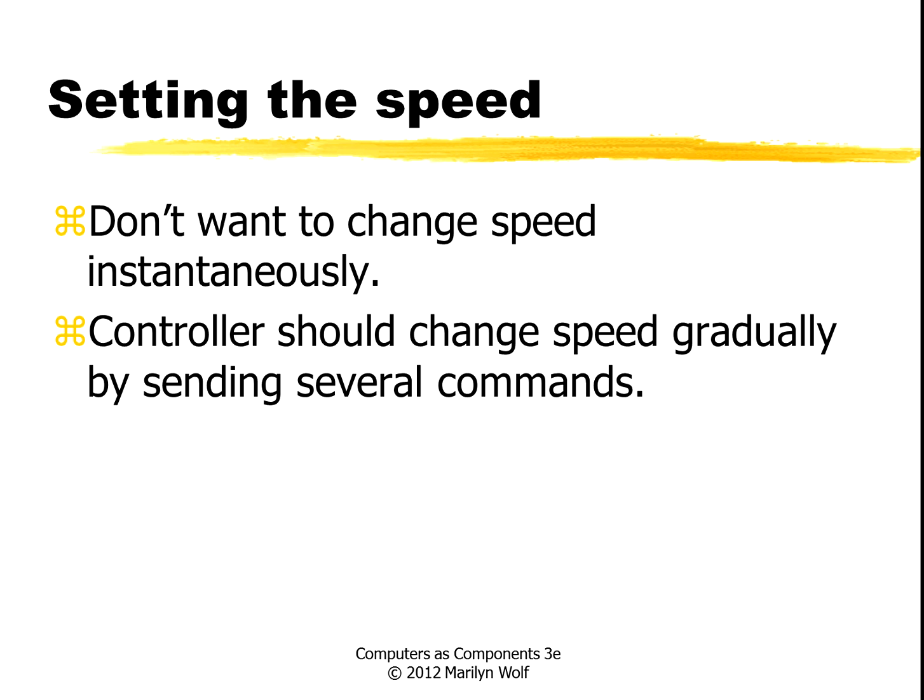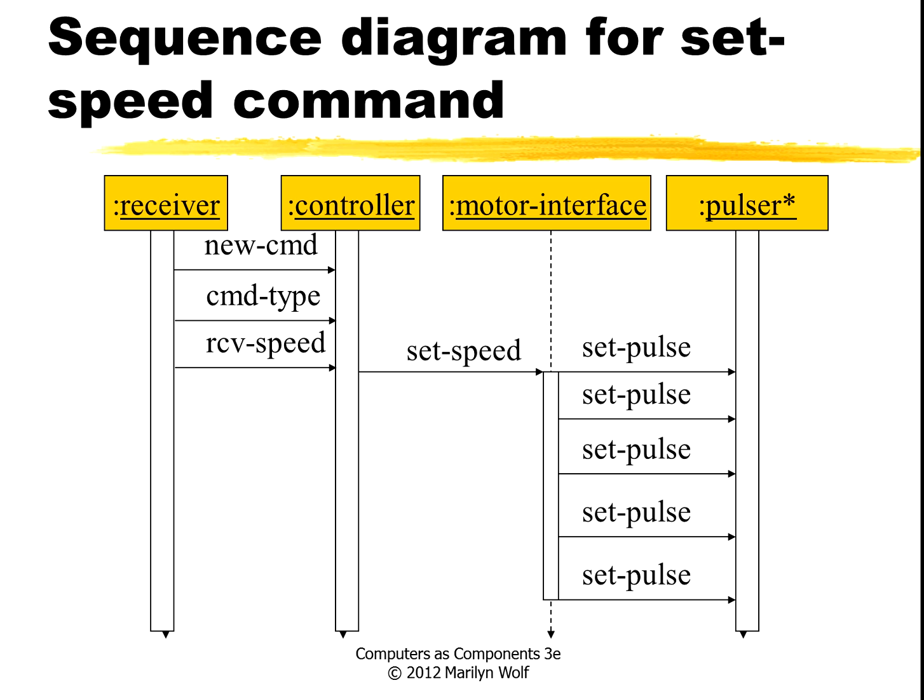A nicer way to implement the speed control is to not change the speed instantaneously. If the user changes the speed knob, the controller can send a set of messages to gradually change the speed to the new value. Here's a sequence diagram for the speed command — this is on the train side. Here's the receiver, that's the physical interface, the controller function, the motor interface, and then the pulsar. We get a new command, the command type is receive speed, we set speed, and then we set the pulse several different times as we ramp up or down the speed.